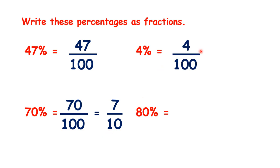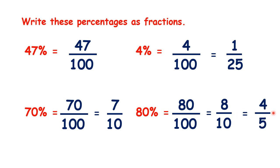Here we have 4 hundredths, which we can simplify by dividing by 4 to get 1 twenty-fifth. And 80% is 80 over 100, but we can simplify that to 8 tenths, and we could simplify that to 4 fifths.